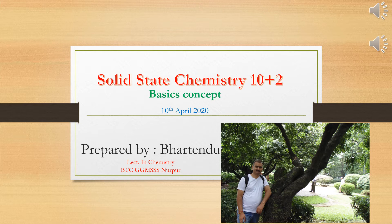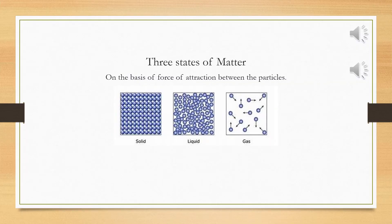In the present topic, we will discuss about the basic and elementary concepts related to the solid states, the types of solids, and the types of crystalline solids. In the previous class, that is 10+1, we already discussed about the three states of matter. On the basis of the basic force of attraction between the particles, we have three types of states: solids, liquids, and gases.